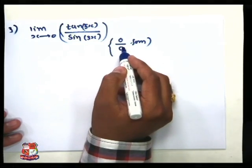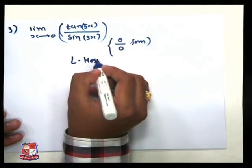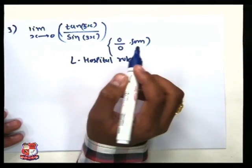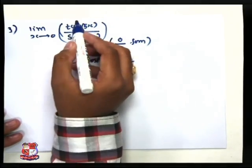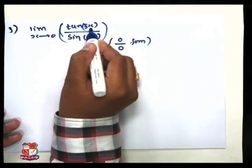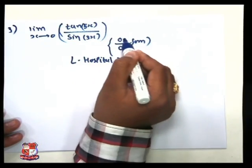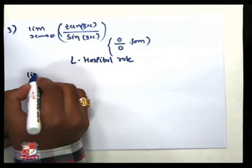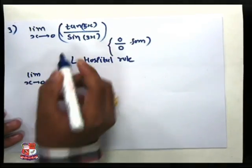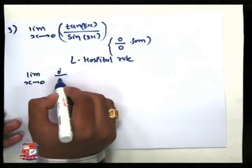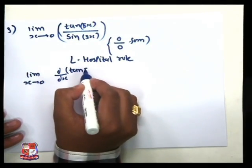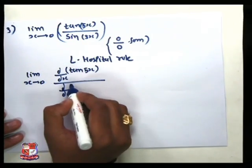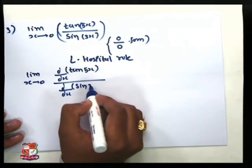Since we have a 0 by 0 form, we want to use L'Hôpital's rule. Using L'Hôpital's rule, we differentiate tan(5x) and sin(3x) because of the 0 by 0 invalid form. So we take the limit as x tends to 0 of the derivative of tan(5x) divided by the derivative of sin(3x).